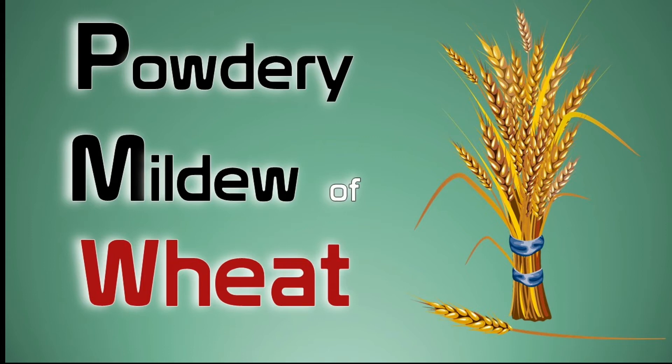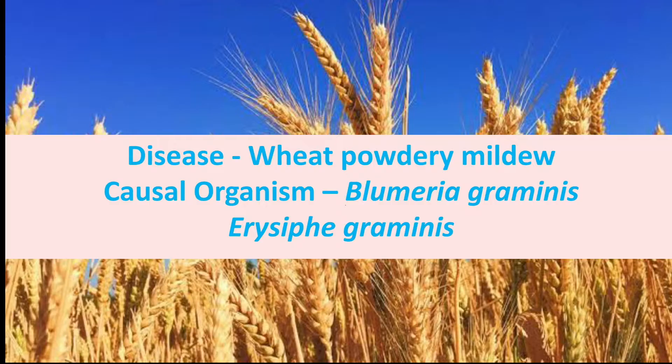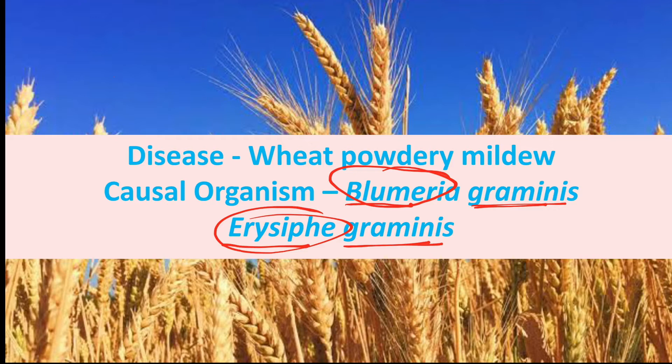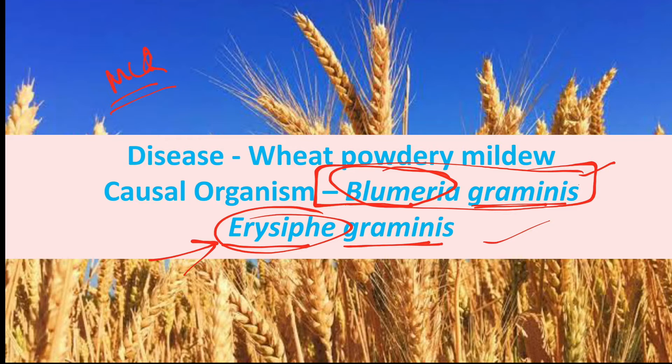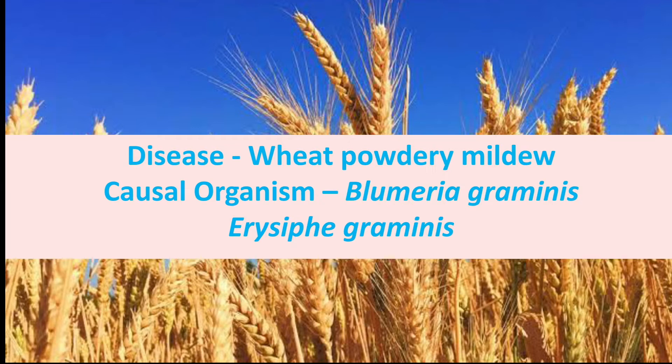Powdery mildew of wheat is caused by Blumeria graminis. Earlier it was known as Erysiphe graminis, but there is a difference between Blumeria and Erysiphe. In multiple choice questions, both names may appear, but Blumeria graminis is the correct answer.